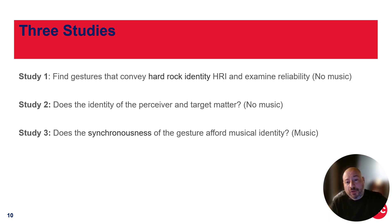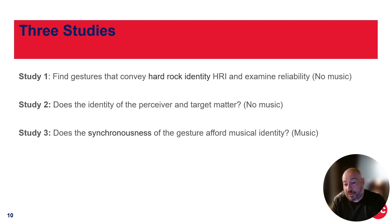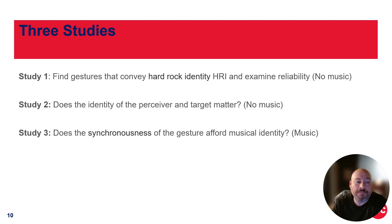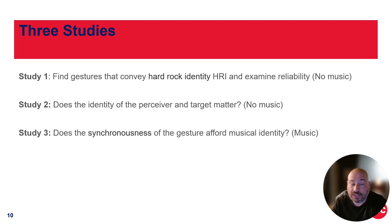So there are three studies — I cannot take you through all the details. The first one is basically just to figure out which gestures are the best, examine the reliability, and it doesn't have music. The second study also doesn't have any music; it's purely based on the gesture, and the question is whether the identity of the perceiver and the target matter — is there an actual social affordance happening here, or is it really just based on what the target is doing? And finally, does the synchronousness of the gesture afford musical identity — does it act as another cue to help someone determine someone's hard rock identity?